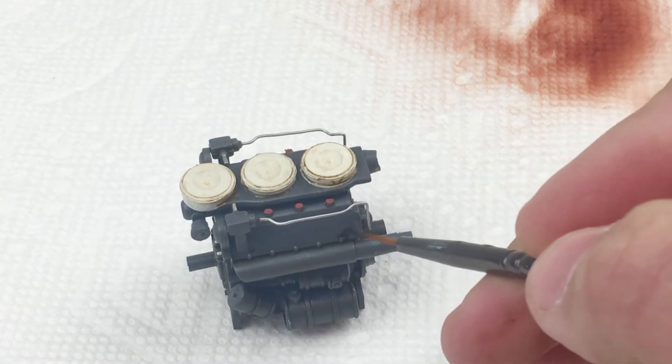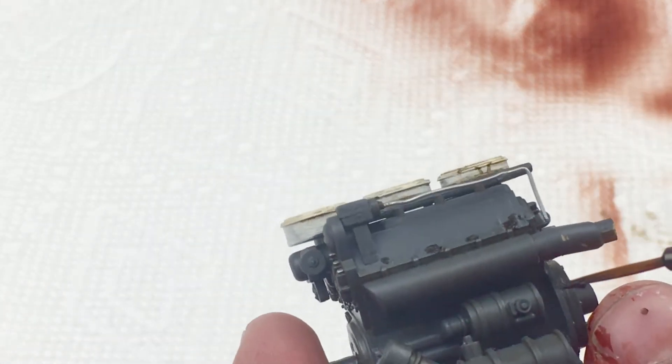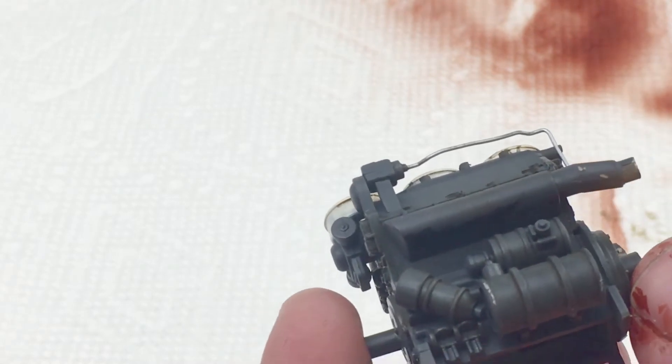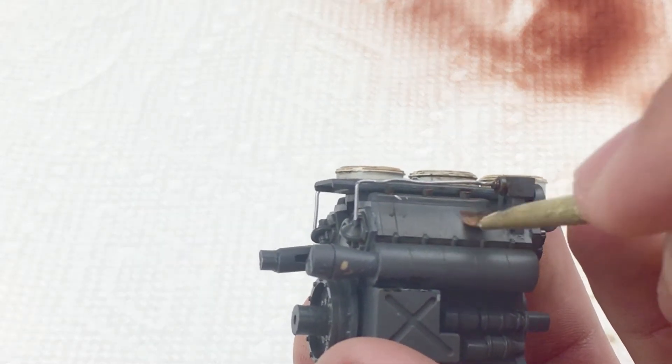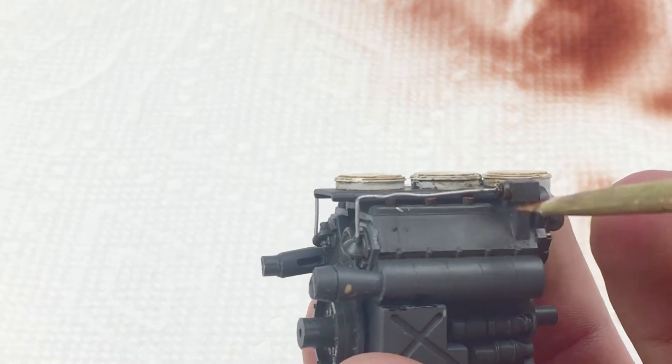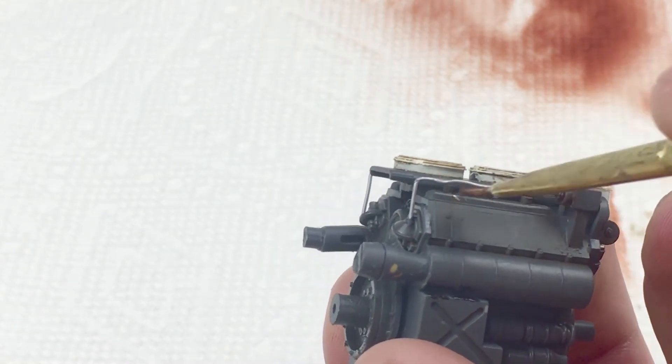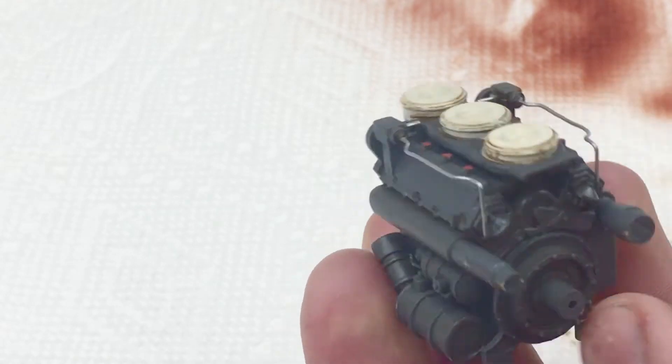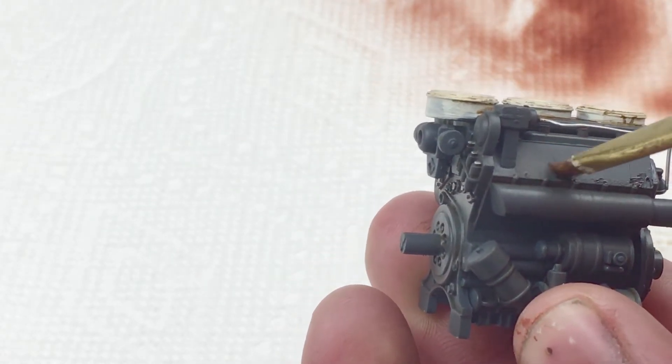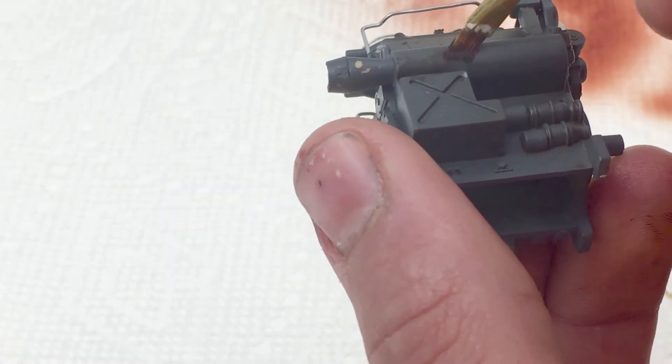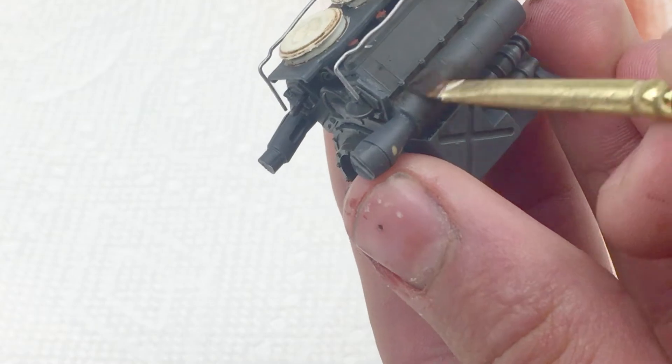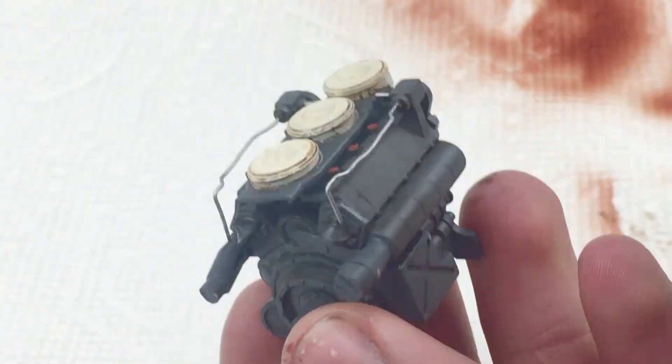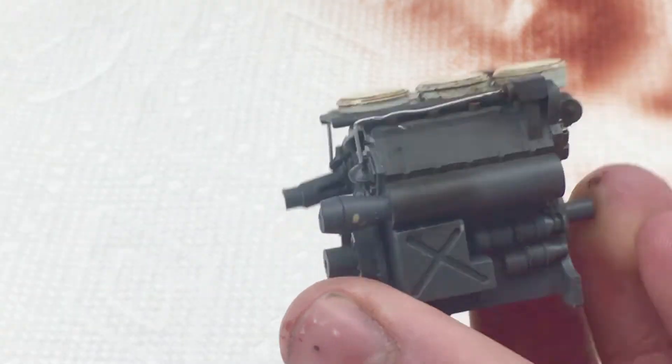After we finish cleaning up the pin wash, we're going to do some oil color modulation by applying small amounts of black and blending it upwards with a 1/8 inch angular shader.